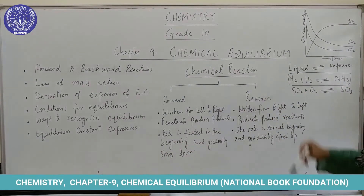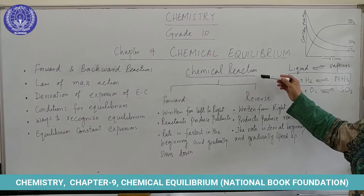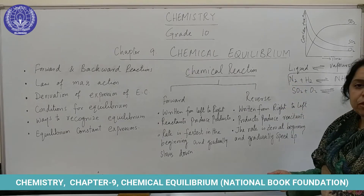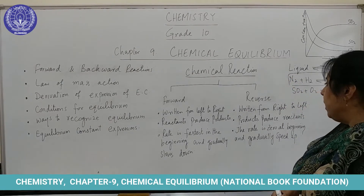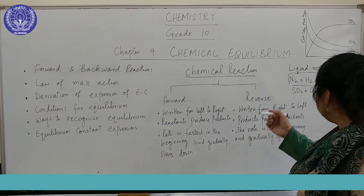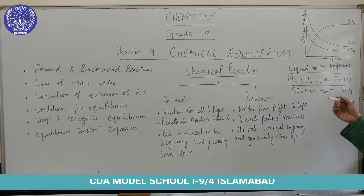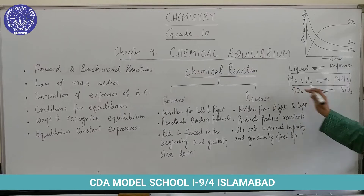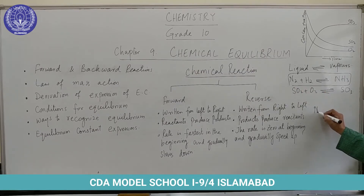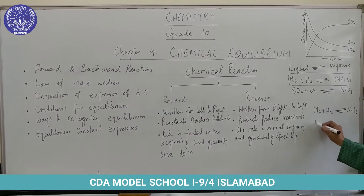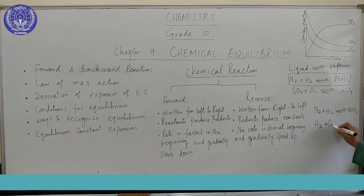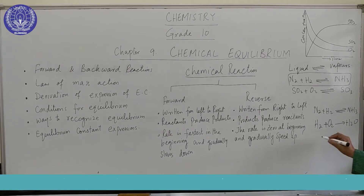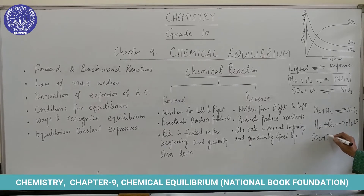Now let's come to the chemical reaction. Chemical reactions are actually the combination and interaction of different reactants to form products. Chemical reactions may be of different types. For example, nitrogen reacts with hydrogen to form ammonia. Hydrogen reacts with oxygen to form water. Sulfur dioxide reacts with oxygen to form SO₃.